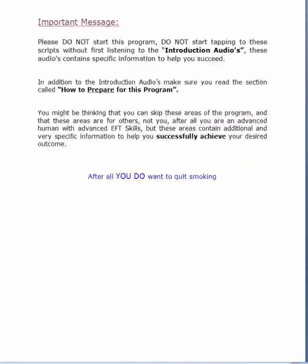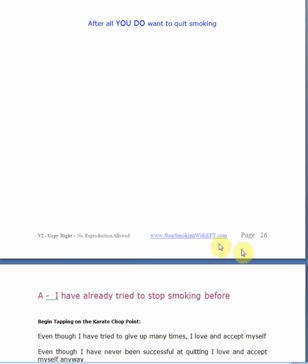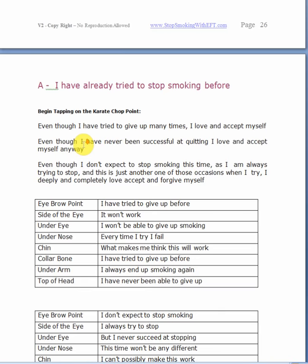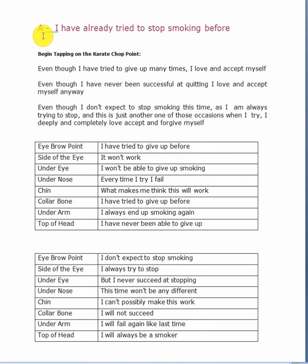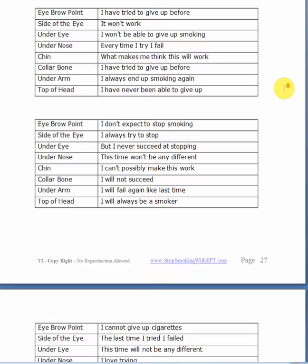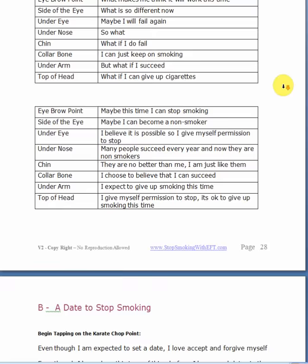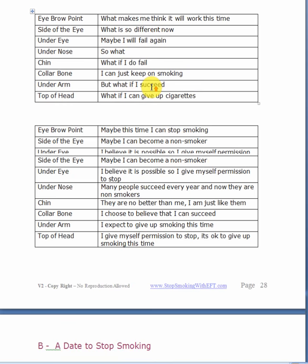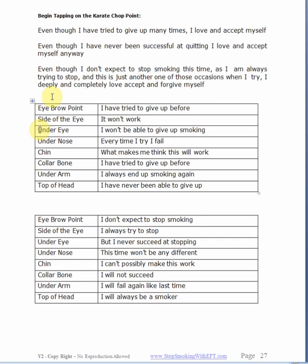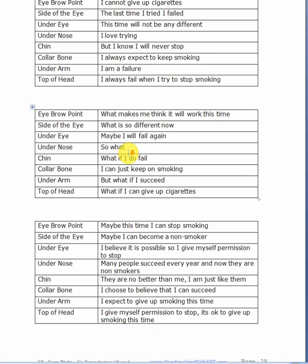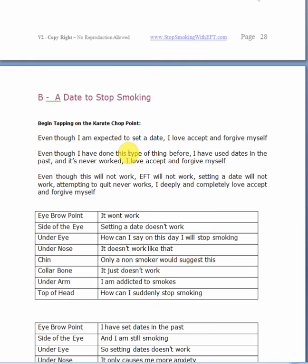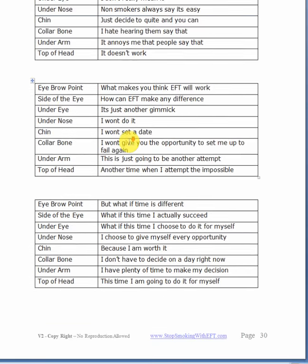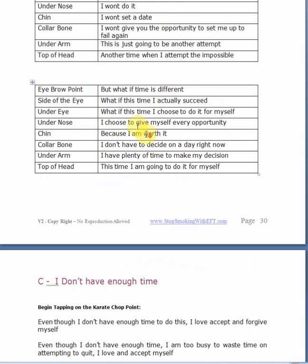So here we are at Script A, which is about having already tried to quit smoking before — we're going to tap on that topic. If you have a look, that script jumps over into two pages. They're full-length scripts. You've got your setup phrase and then your whole sequence, and the sequence goes around roughly five to six times per script. Moving to the next script — it's a full-length script. We're not repeating the same stuff; we're going over that topic but taking it from different angles.